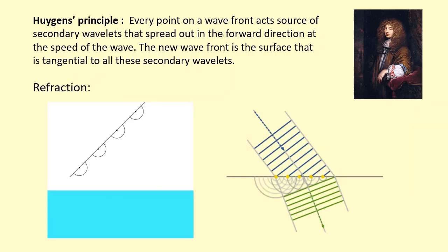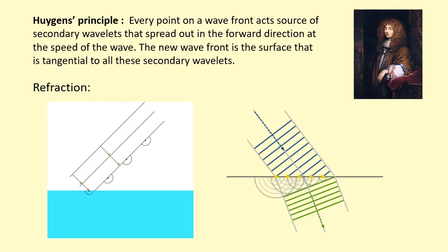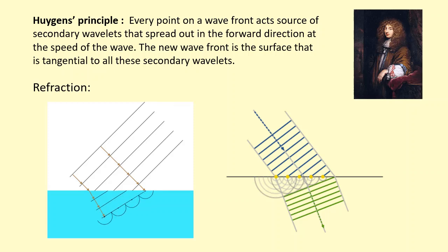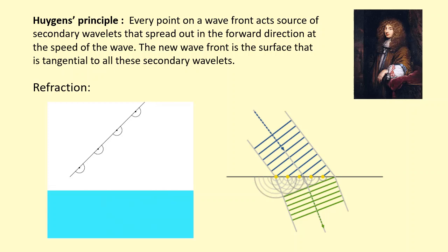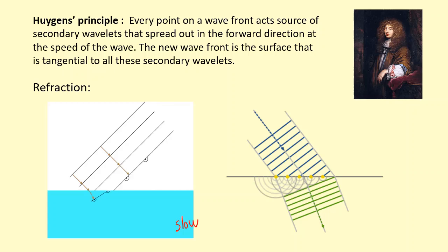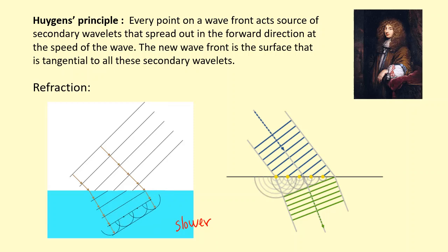He was also able to explain refraction. As you can see in this diagram, this is different from Newton's corpuscular theory, because Huygens predicted that the wave would be slower in a more dense medium — which is correct, and which was measured much later — and his theory was able to successfully explain that.